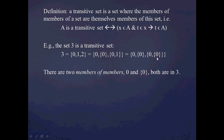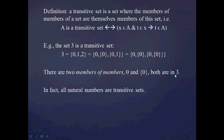But let's look at the members of the members. For this first member — the empty set — there are no members, so we don't have to worry about that. For the second member, {0}, we have 0 as a member of a member. For the third member, {0, {0}}, the members are 0 and the set containing 0. And notice that these two things are both in the set 3. So we've shown that 3 is a transitive set.